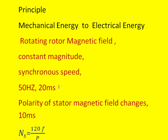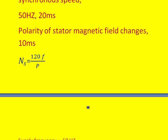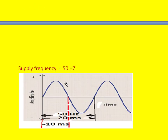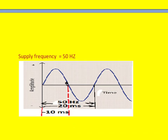The voltage produced from the stator is a 50 Hz three-phase AC supply. If you look at one phase of the stator output voltage, it has a frequency of 50 Hz, meaning its time period is 20 milliseconds — its polarity changes every 10 milliseconds.